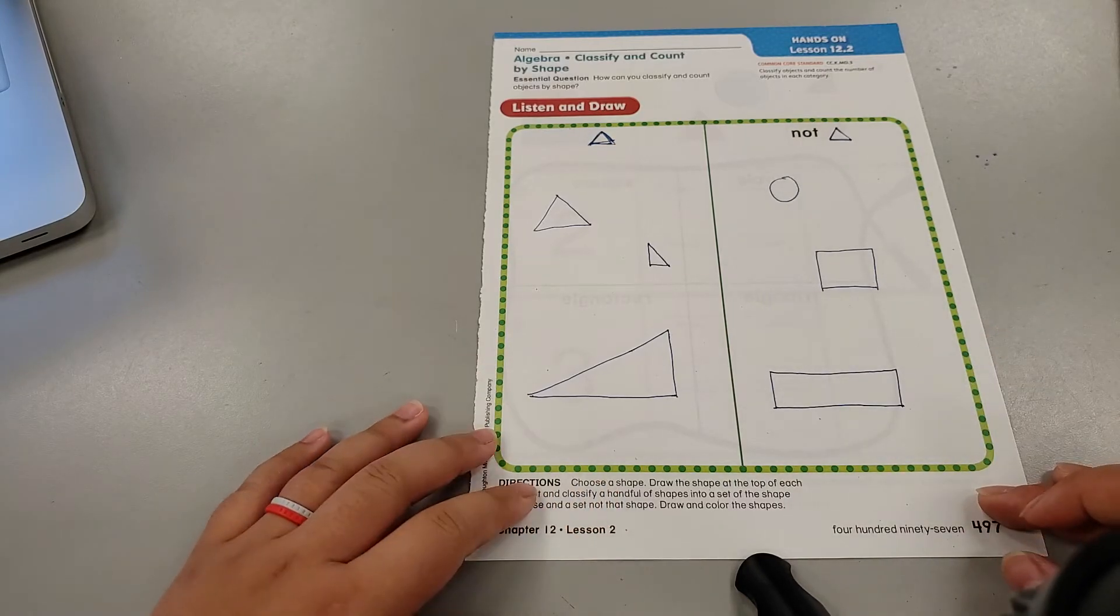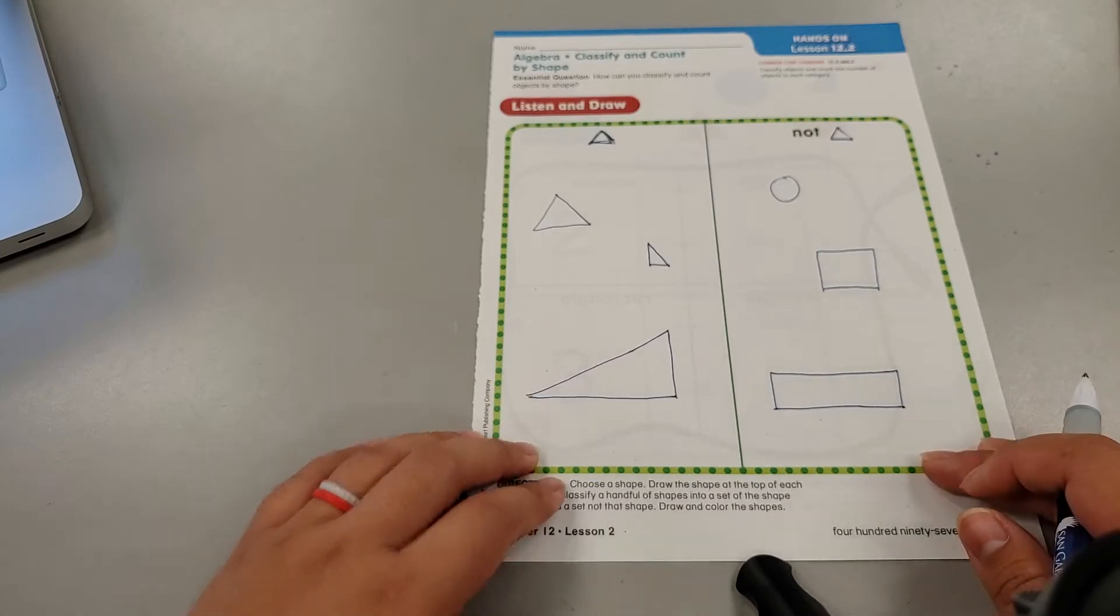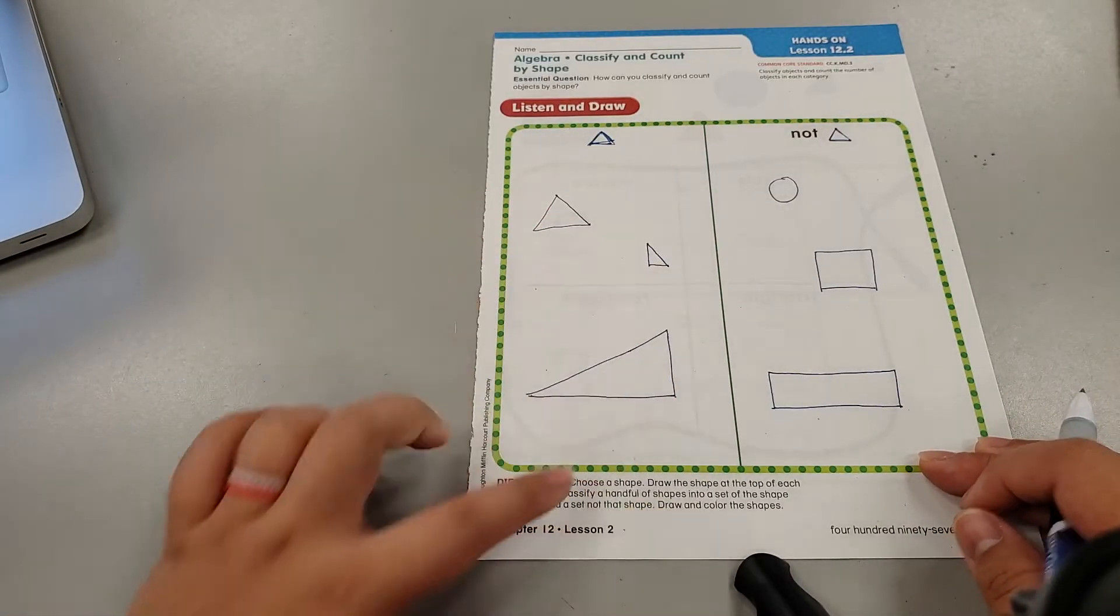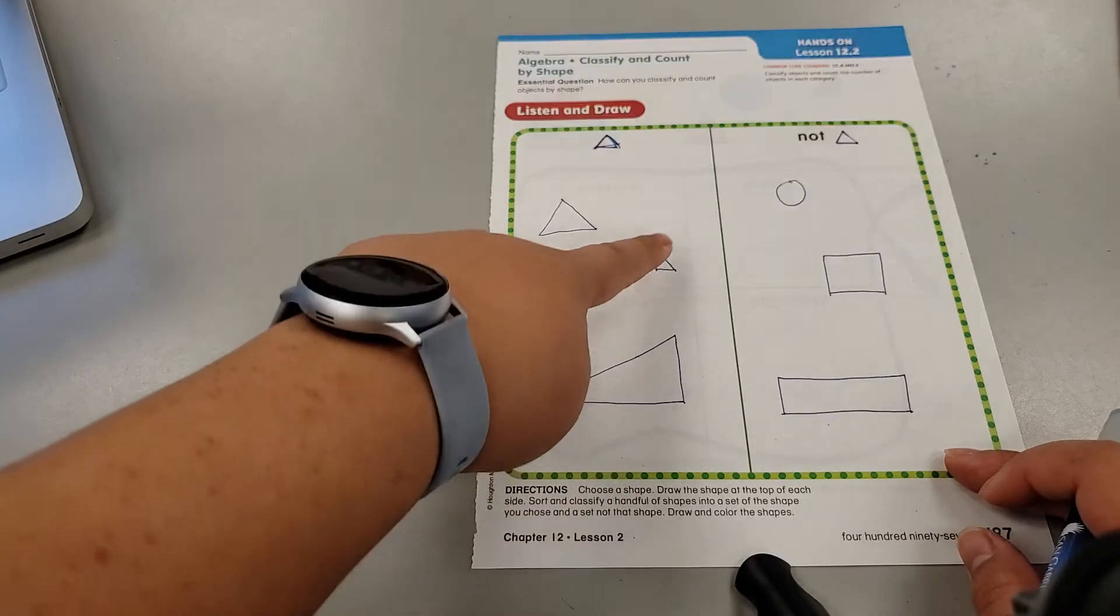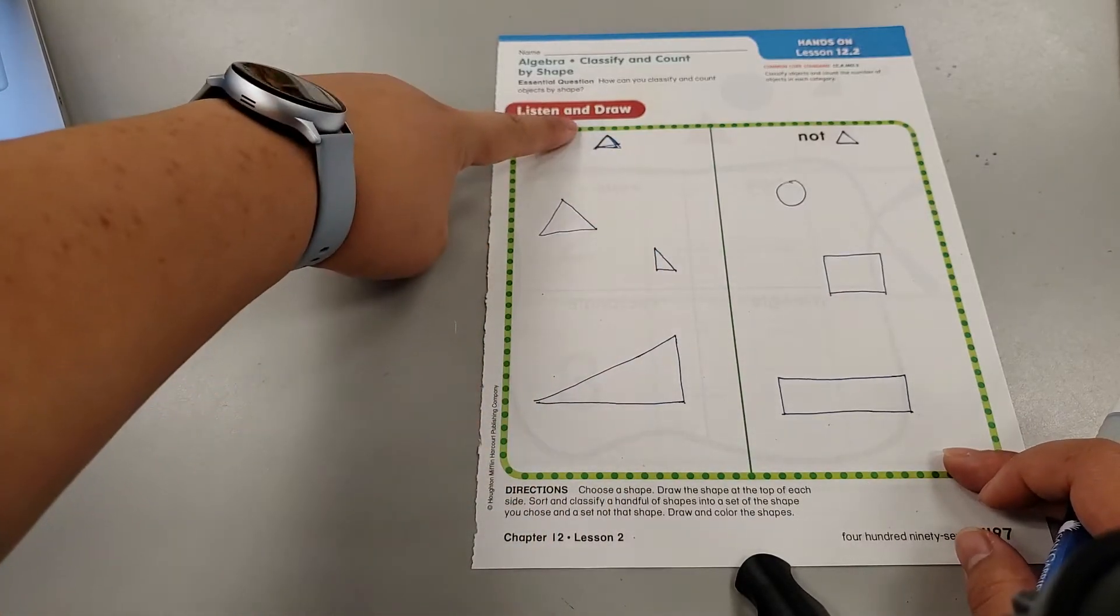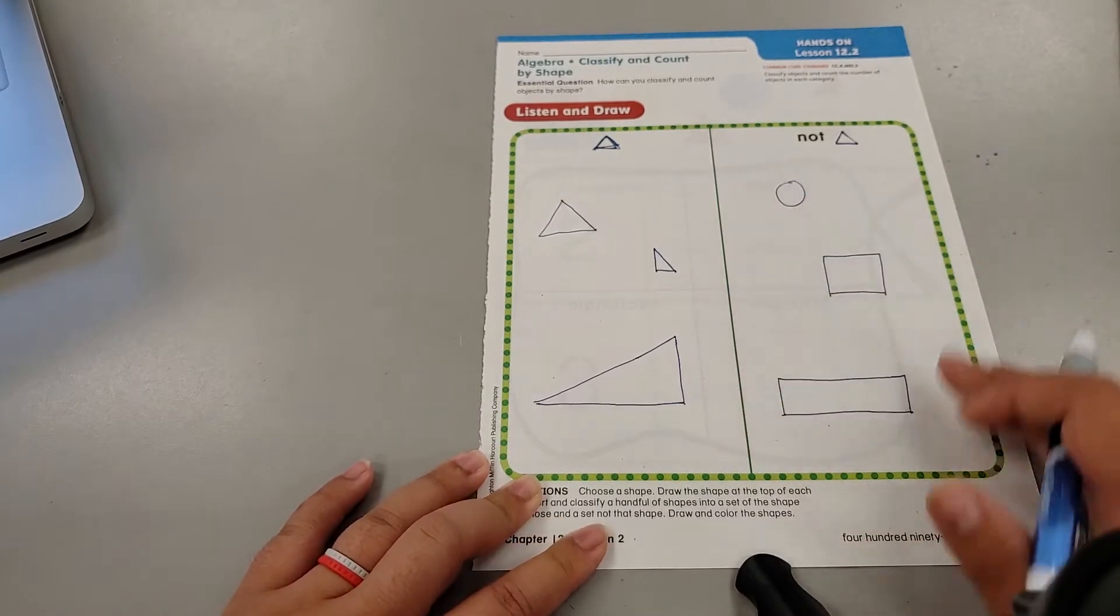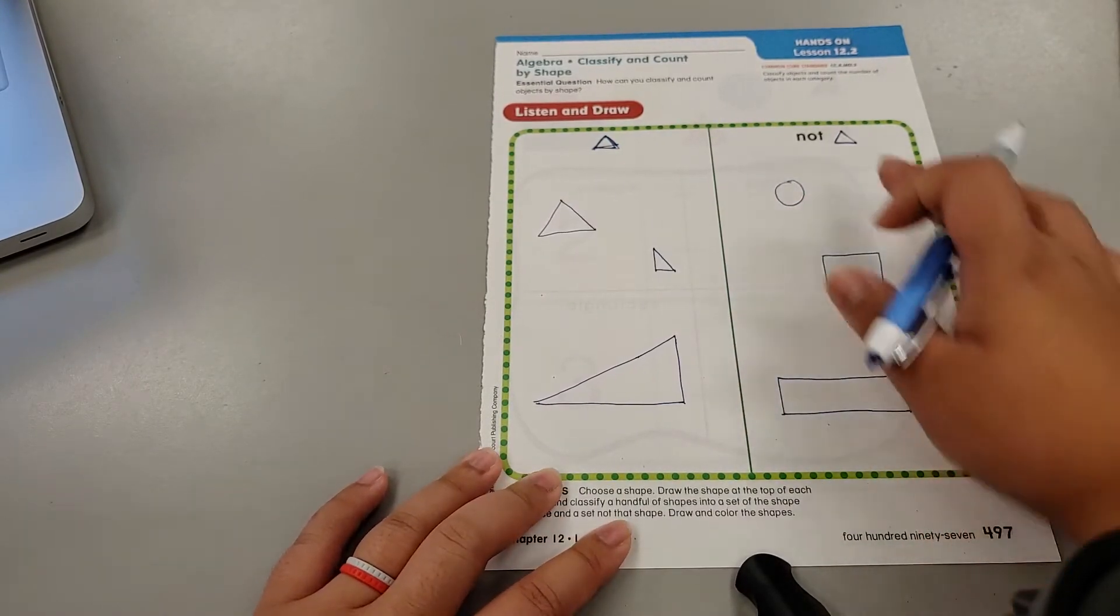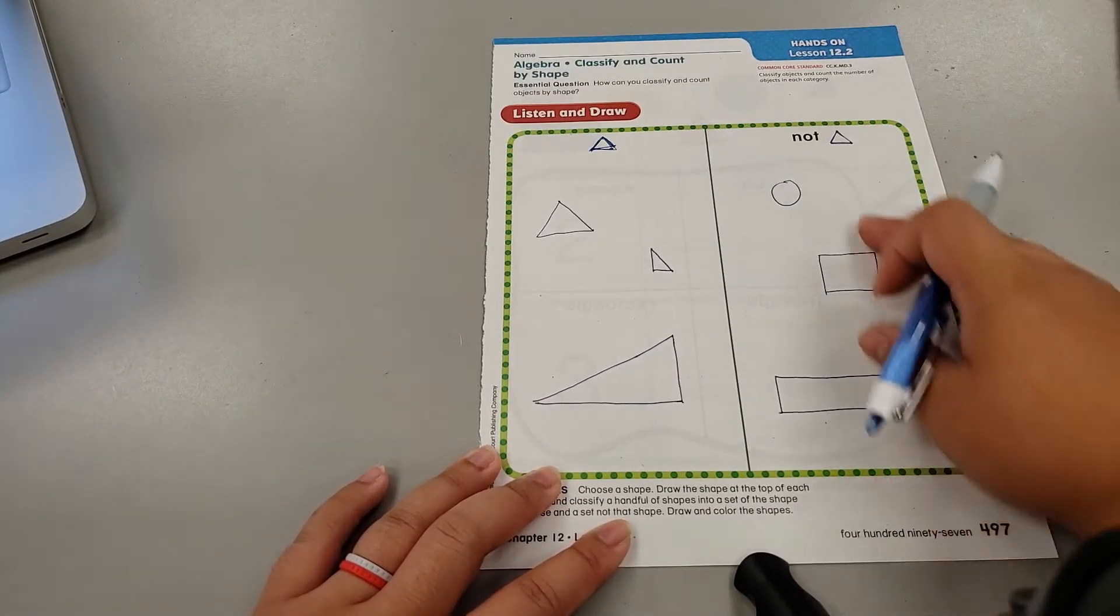I sorted my shapes based on what kind of shapes they were. It doesn't matter that this is a big shape or that this is a small shape. If it is a triangle, it gets to live here. It doesn't matter if that's a small circle or this is a big rectangle. They are not triangles. So we sort them on this end.